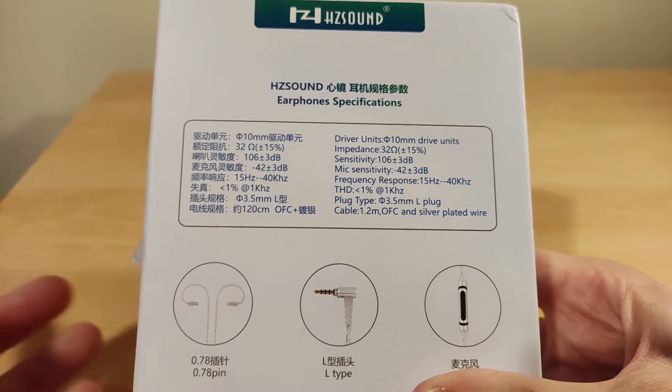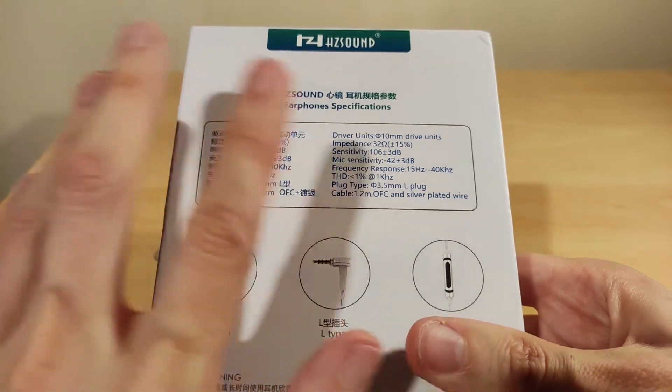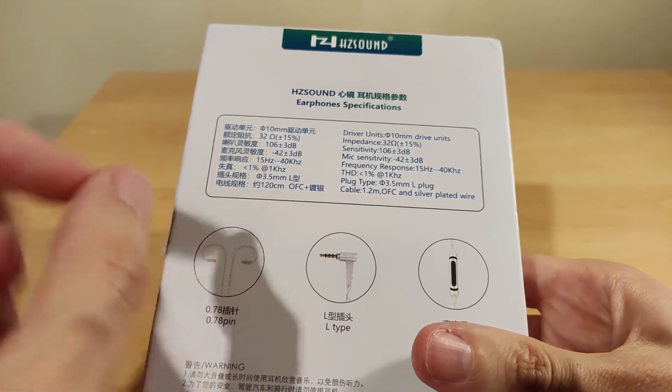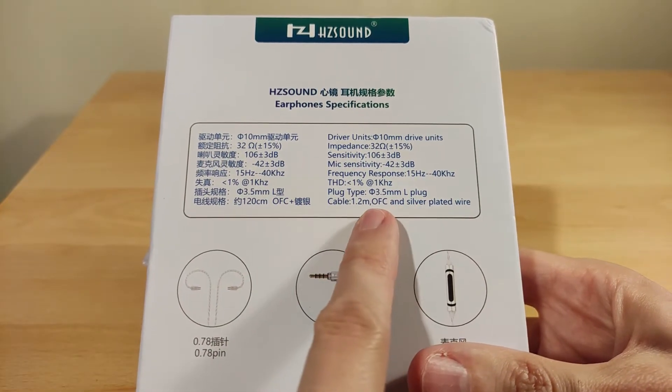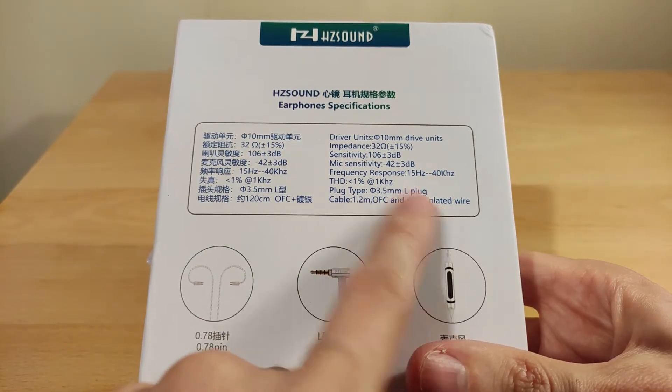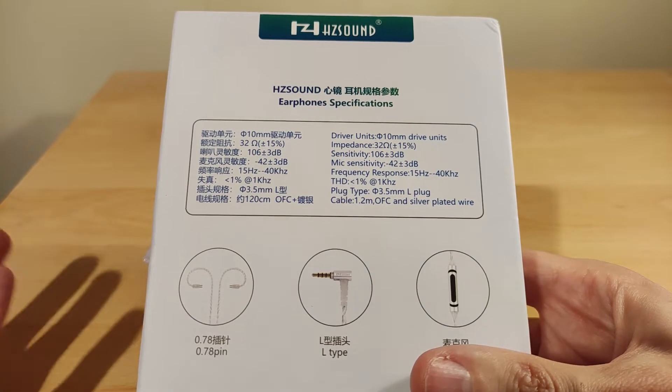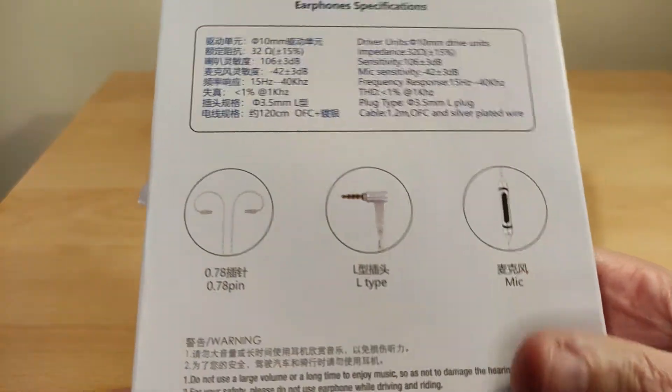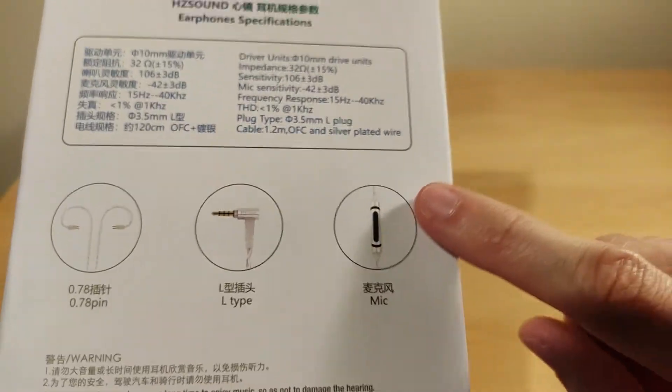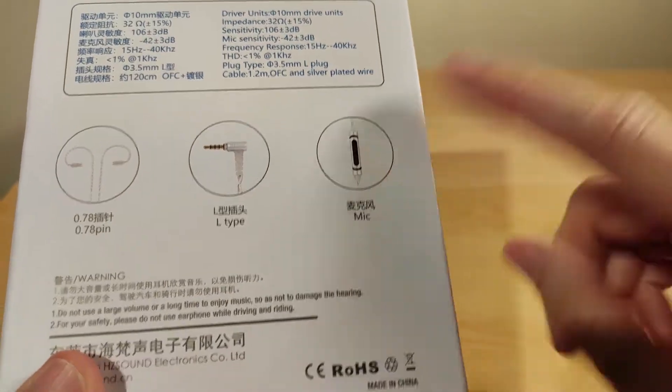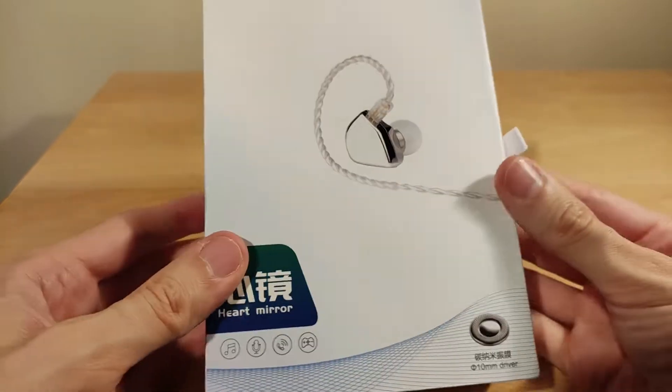Specs: 32 ohm impedance, 106 decibels of sensitivity which shouldn't be too bad. I've heard these are kind of harder to power but not really hard. 1.2 meter cable, oxygen free copper silver plated wire. Frequency response 15 hertz to 40 kilohertz which is more than enough. 0.78 2-pin, right angle connector which is good. Looks like these may have an inline mic.